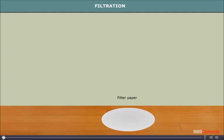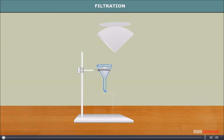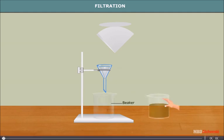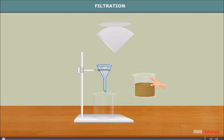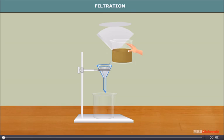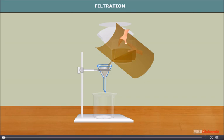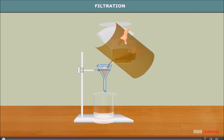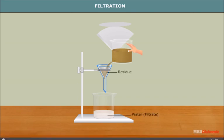You will need a funnel, a circular piece of filter paper, two beakers, a stand, and some muddy water. Hold the circular piece of filter paper and make a cone out of it. Fit this cone into the funnel. Keep a beaker below the funnel. Take muddy water in another beaker and slowly pour it onto the filter paper in the funnel. You will notice that clear water comes out from the funnel and collects in the beaker below. On taking out the filter paper and opening it, you will see the particles of mud trapped in it.